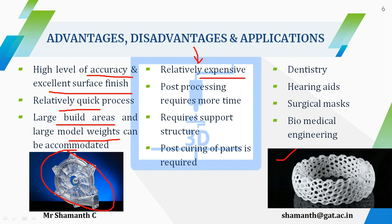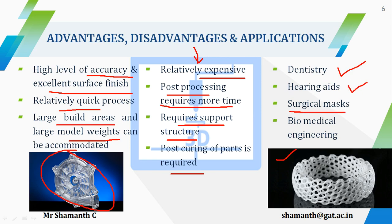The disadvantage is the process is relatively expensive, and post-processing requires more time — you must subject the printed part to post-processing before getting the final output. It requires support structures, without which you cannot manufacture the part, and post-curing of parts is also required. Those are the disadvantages of photopolymerization, also called stereolithography. Major applications include dentistry, hearing aids, surgical masks, and biomedical engineering.